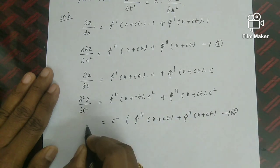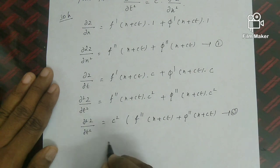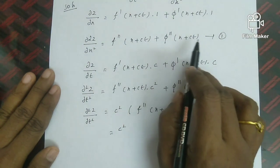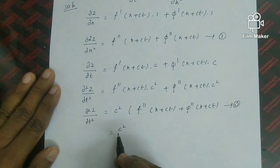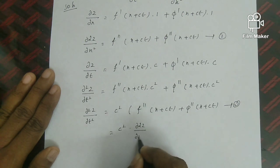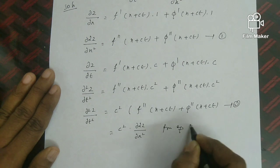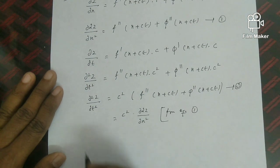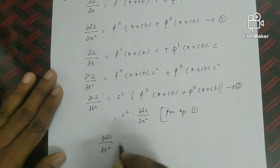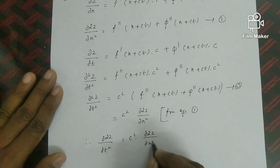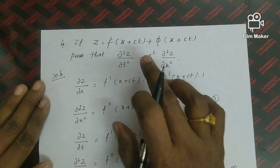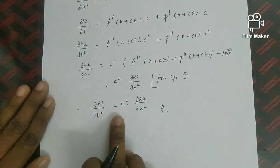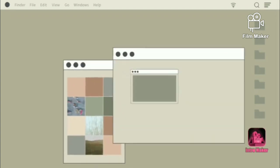Comparing equation 1 and equation 2: equation 2 is c² times equation 1. That is, ∂²z/∂t² = c²·[f''(x+ct) + φ''(x−ct)] = c²·∂²z/∂x². This is exactly what was to be proved. Based on total differential and dy/dx problems, you will see more results in the next lecture video. Thank you for watching.